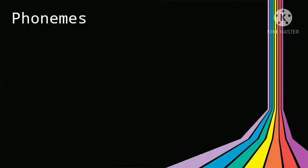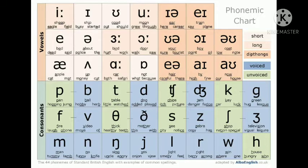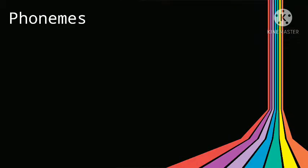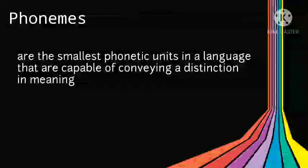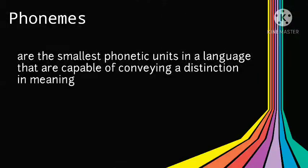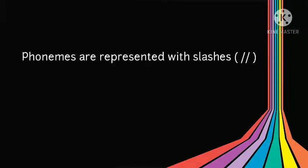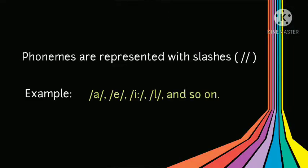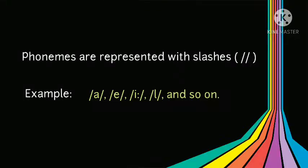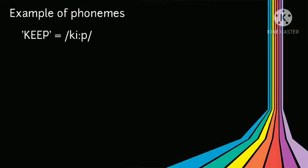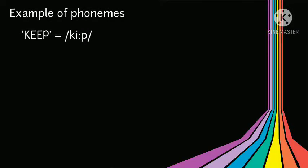Now let's proceed to phonemes. This chart is a phonemic chart. Phonemes are the smallest phonetic units in a language that are capable of conveying a distinction in meaning. Phonemes are abstract mental representations, and they are represented with slashes as you can see in the examples. The word 'keep' contains three phonemes: /k/, /i/, and /p/.